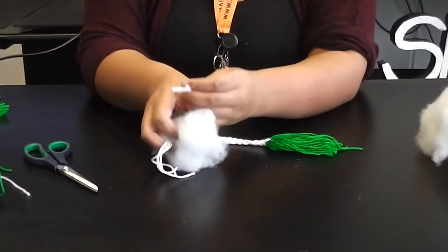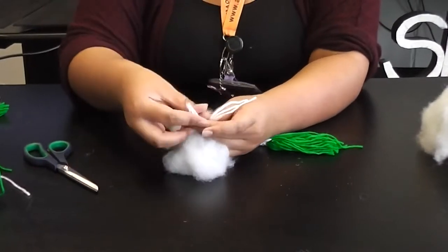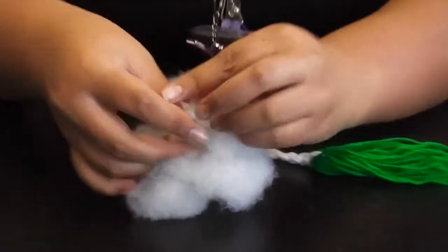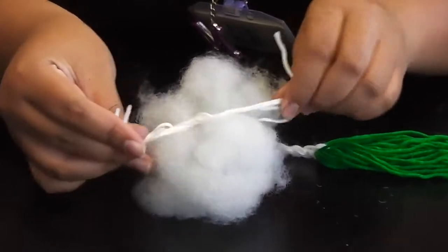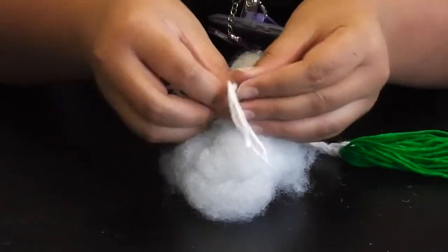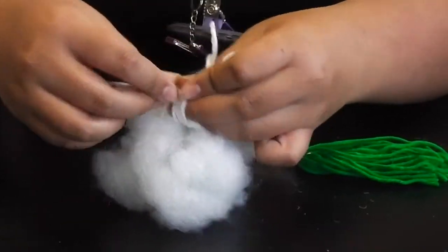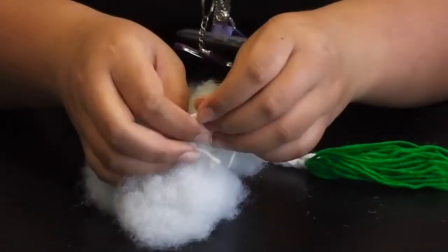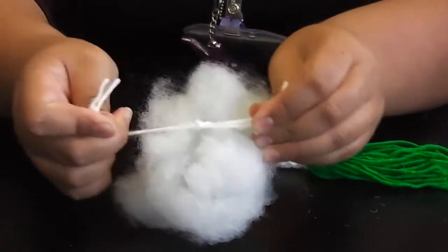So we'll just grab a bit of wool and we'll tie it around. Now you're going to want to tie that nice and tight like a shoelace and you're going to want to do that twice because when you're playing with your poi these parts might actually come out so it's quite great if you have this nice and tight like so.